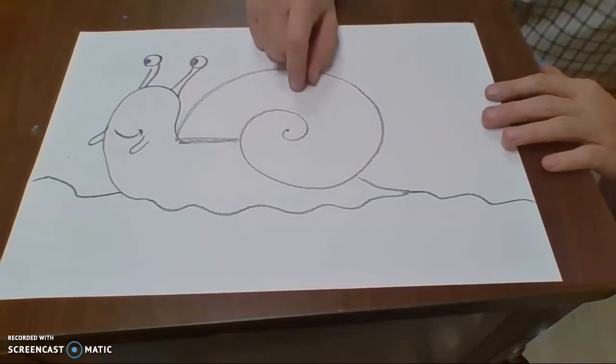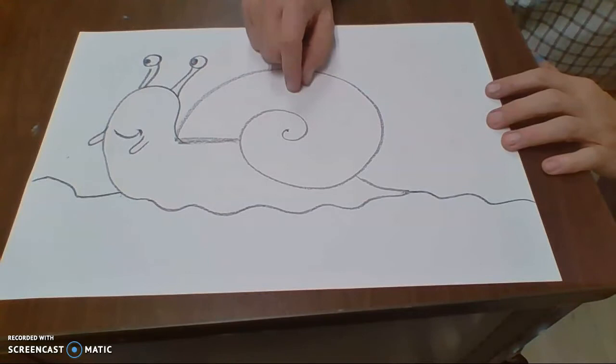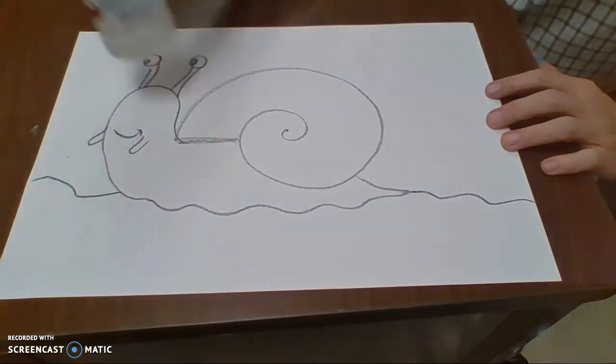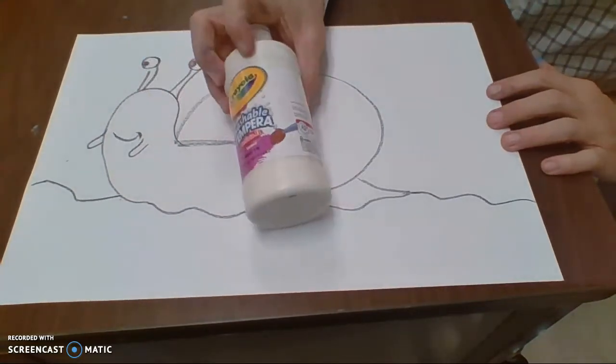A tint is when I make a color lighter. To make any color light, all I have to do is take that color, like blue, red, yellow, green, and I'm going to mix it with white. White makes any color lighter.